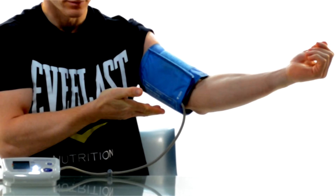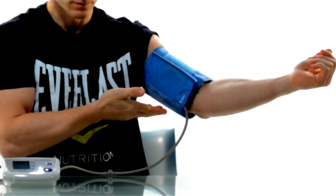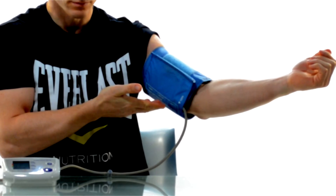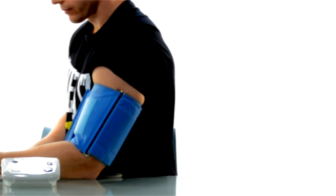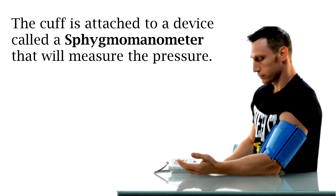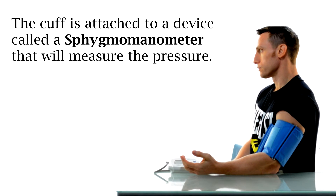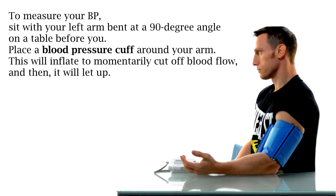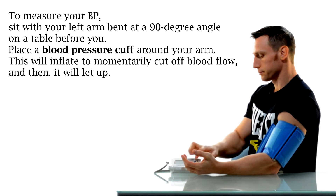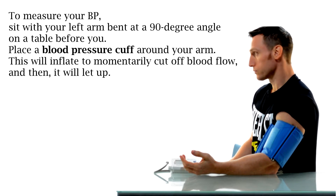Your blood pressure can be measured by a device called a sphygmomanometer, which is attached to a cuff. To measure your blood pressure, you sit with your left arm bent at about a 90-degree angle and place it on a table before you, then place the blood pressure cuff around your arm. The cuff will momentarily inflate to cut off the flow of blood, and after a moment it will deflate to let the blood flow once more.